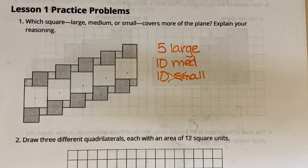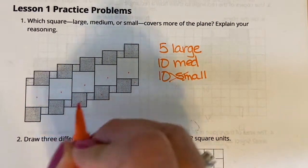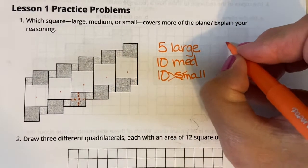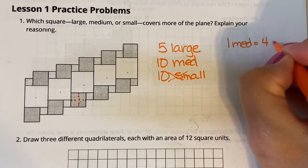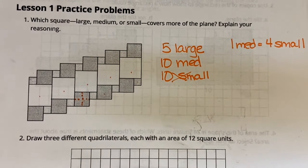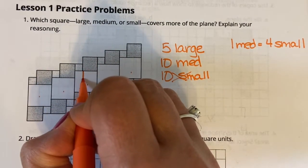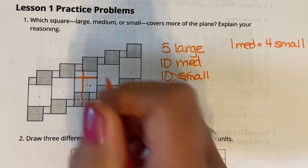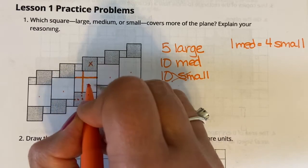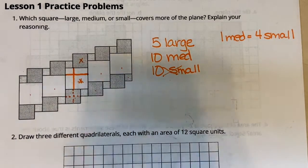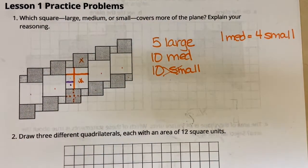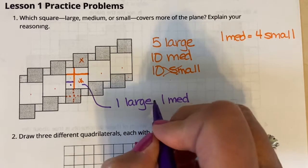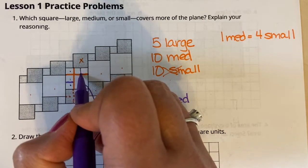Here's how we're going to do this. One medium square equals four small squares. We already know the smalls are out, so I'm going to make everything small squares and see who has the most. So one large square — if I split it — equals one medium plus five small. So five large equals five medium plus 25 small. Now I'm going to figure out how many smalls five mediums would be. Each medium equals four small, so five times four is 20 small.